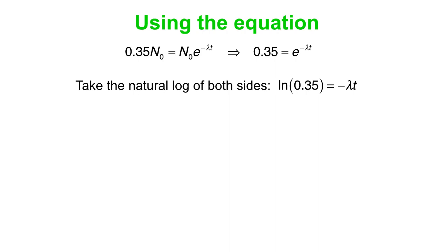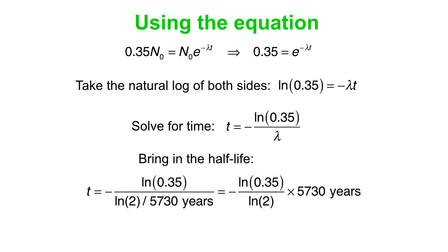Then you rescue the minus lambda t from the exponent. Solve for time. t is minus ln .35 over lambda. Bring in the half-life, and lambda, remember, is ln 2 over the half-life. And so what you end up with is ln .35, that's a negative number by the way. Any number less than 1 has a logarithm which is negative. Divide by ln 2, multiply by 5730. You got your answer. And it turns out to be 8680 years, approximately.